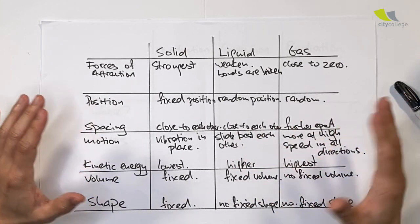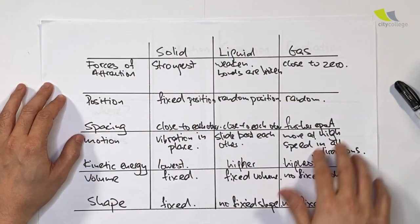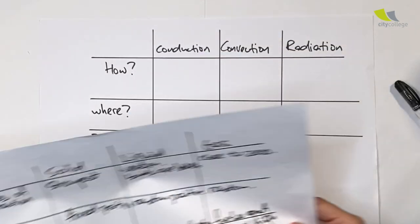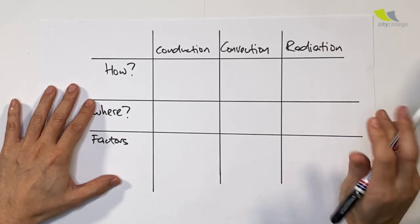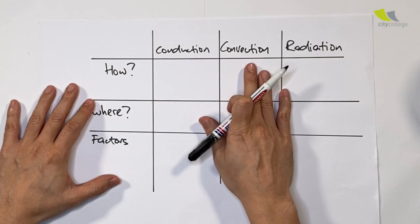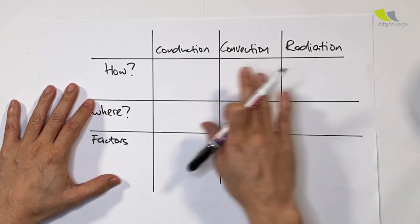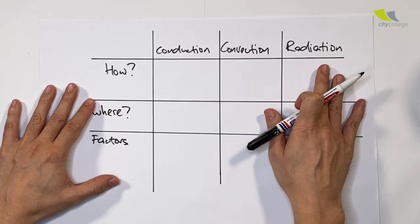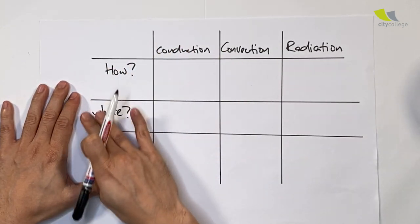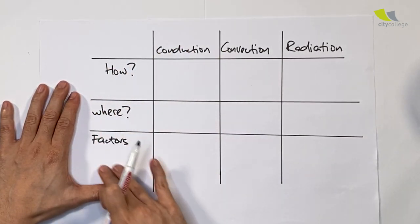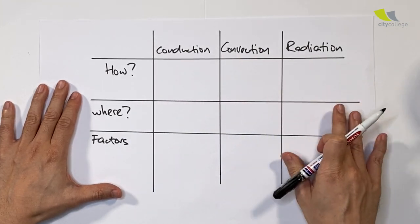This topic is kind of related to the kinetic model as well, and you will see that later on. Let me quickly just do an overview of the ways that thermal energy gets transferred. There are three main ways: conduction, convection, and radiation. Let me go through how each happens, where it happens, and the factors that determine the rate of conduction, convection, or radiation.